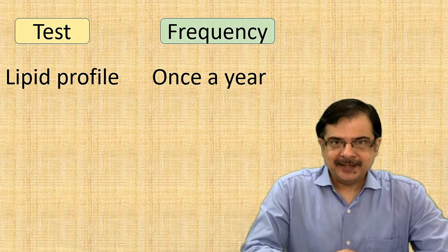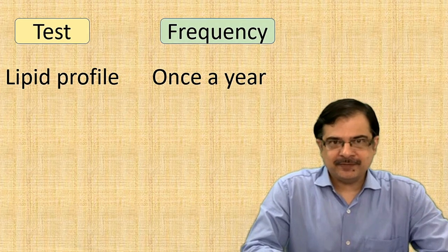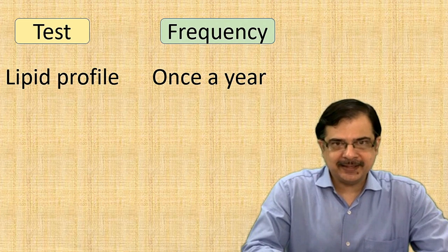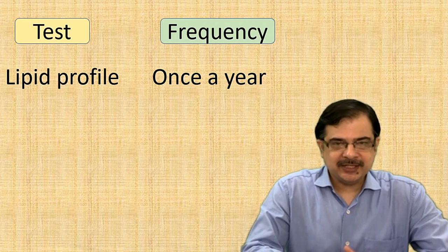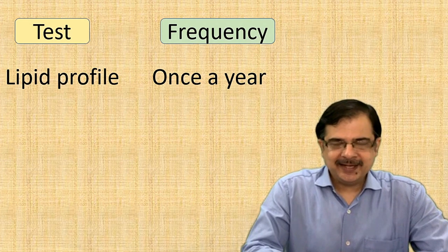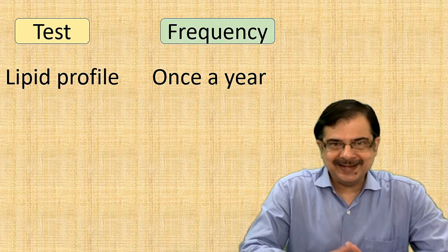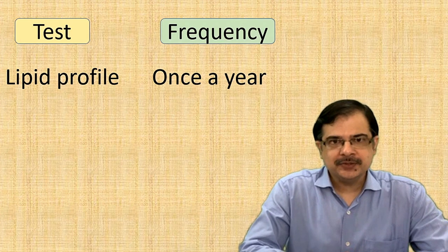Lipid profile: in diabetes there are chances of high triglycerides, high LDL level—LDL is bad cholesterol—and low HDL level—HDL is good cholesterol. That test should be done once a year, while if one is on medication or lipid profile is damaged, then it should be done every three months.